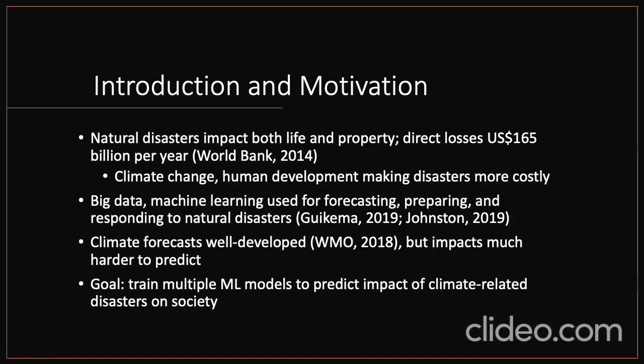Natural disasters impact both life and property. Globally, direct losses are valued at about $165 billion per year. Indirect losses can increase that by around 50% or so. And with climate change and human development, we're expecting this figure to get higher and higher as time goes on, making disasters quite a bit more costly. So big data and machine learning have been used for forecasting, preparing, and responding to natural disasters, and they've been particularly good at looking at climate forecasts.